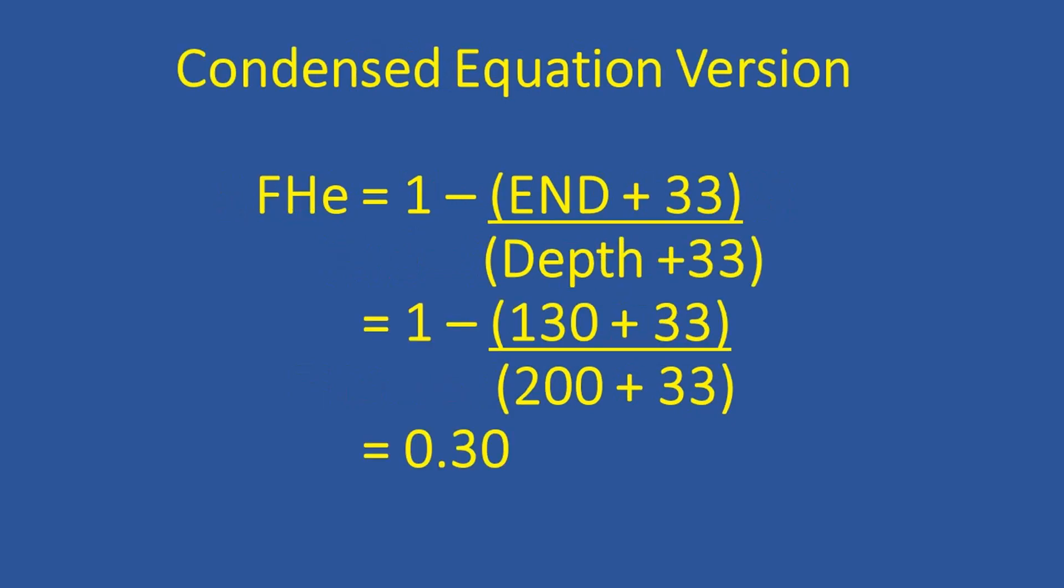Now that we understand the calculations, we can actually make a condensed equation. So this would be: the fraction of helium would be equal to 1 minus the term with the numerator END plus 33 divided by the depth plus 33. So in our particular example, that would mean it would be equal to 1 minus 130 plus 33 divided by 200 plus 33, or again 0.30 fraction or 30 percent helium in the mix.